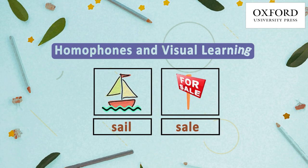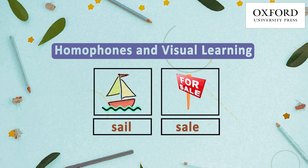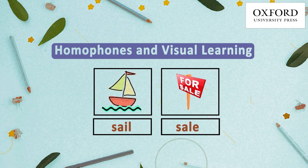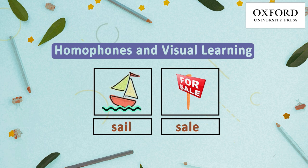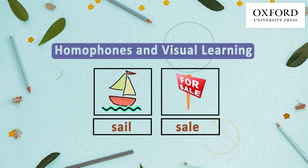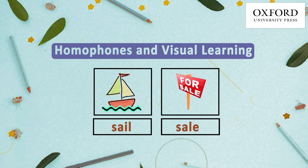We can make learning homophones easy and fun by adding images. You can collect various images and make your own fun game to match the correct homophone to the image. For example: flower, flour, save and safe.